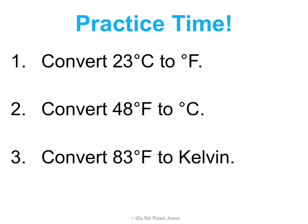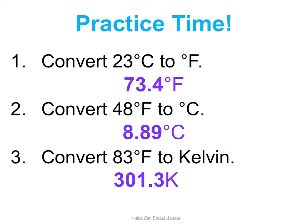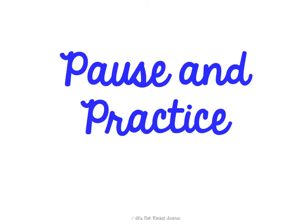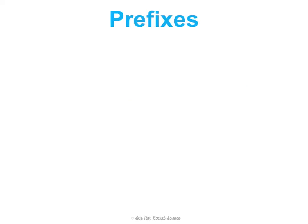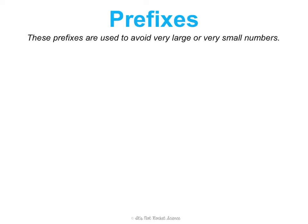Pause the video now, do the practice problems, then press play and check your answers. In class we'll pause and practice temperature conversions, but in this video we're going to keep going on to conversions. Let's talk about those prefixes I mentioned earlier. These are used to avoid really large or really small numbers when collecting data — we attach them to a unit name. For example, attaching 'milli' to 'gram' gives us milligram, abbreviated mg.